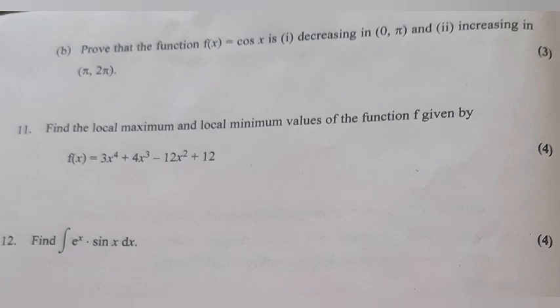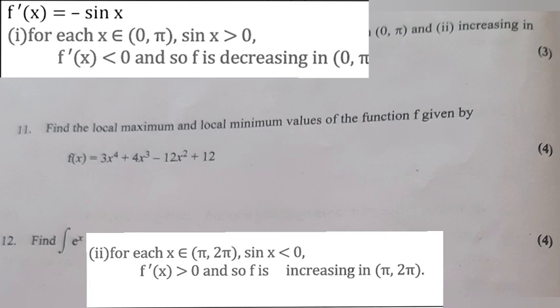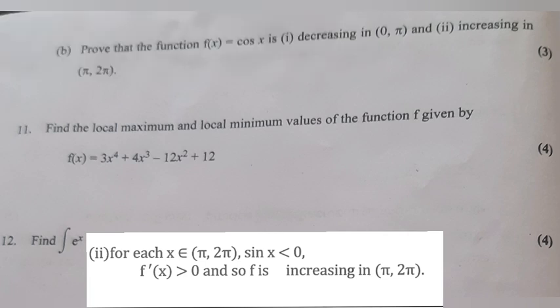Question 10B: Prove that f(x) = cos x is (1) decreasing in (0, π) and (2) increasing in (π, 2π). Answer: f′(x) = −sin x. For x ∈ (0, π), sin x > 0, so f′(x) < 0 and f is decreasing in (0, π). For x ∈ (π, 2π), sin x < 0, so f′(x) > 0 and f is increasing in (π, 2π).